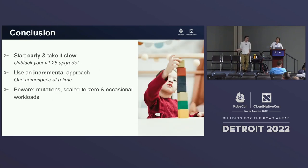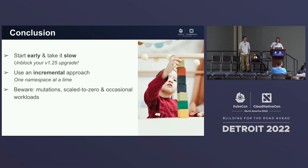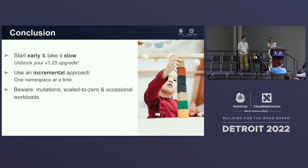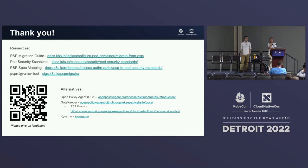In conclusion, we recommend that you start early and take it slow - try to unblock your 1.25 upgrade before you really need to get to 1.25. We definitely recommend an incremental approach. Sam demoed how you can use a privileged pod security policy bound to an individual namespace to migrate one namespace at a time. You don't need to do the whole cluster at once. Remember to be aware of mutations and scale-to-zero workloads. Thank you - here are all the links referenced in the talk and a few other resources.